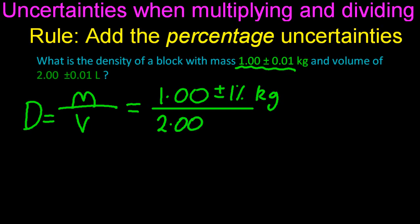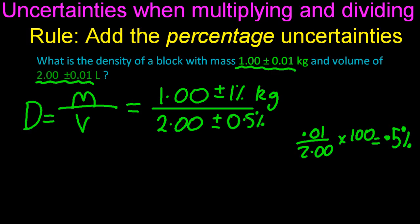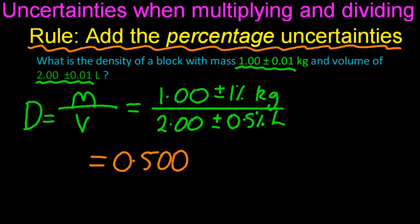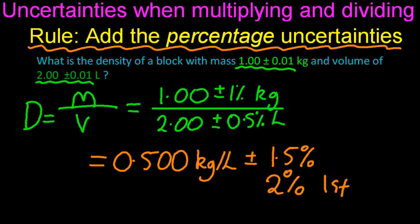And my uncertainty associated with that 1kg is 1%, so plus or minus 1%. And the volume, my uncertainty associated with that is 0.01 litres in 2 litres. And so that's going to be a 0.5% uncertainty. Now it's tempting to divide those uncertainties, but the rule is you have to add the percentage uncertainties. So that gives me 0.500 kg per litre, plus or minus 1.5%. Now sig figs should really be used here. So for uncertainties, you should have a 1 sig fig. So that's plus or minus 2%.